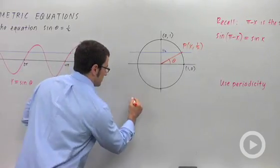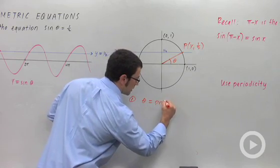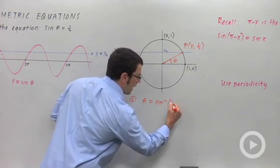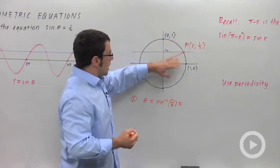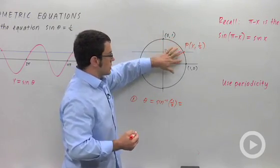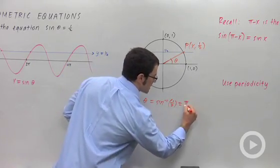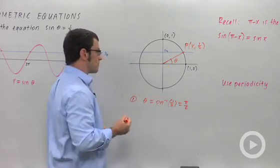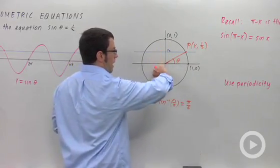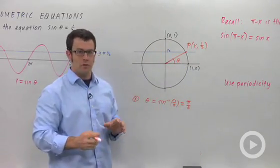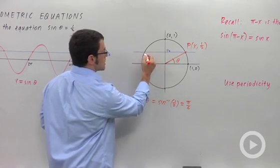The first solution that we get comes from the inverse sine. Inverse sine of 1 half is going to give us the angle in between negative pi over 2 and pi over 2 that satisfies the equation. In this case, it's pi over 6, this solution. But you can see that within the interval from 0 to 2 pi, within the first period of sine theta, there are two solutions. Here's the second one.